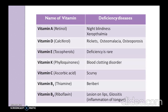Vitamin E, which is tocopherol, has a very rare deficiency, but if it occurs, symptoms include difficulty with walking and coordination as well as muscle pain. Vitamin K, known as phylloquinones, causes blood clotting disorders, with increased bleeding and increased clotting time.